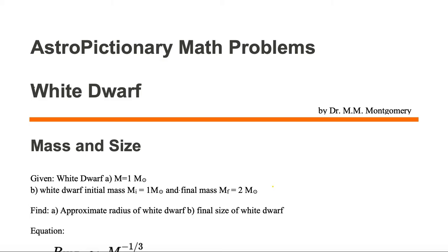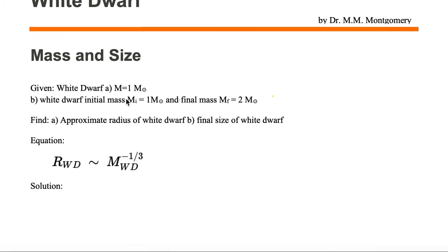In this astro-pictionary math problem, we are going to look at a white dwarf mass and size. We're given in part A a white dwarf mass of one solar mass, and in part B a white dwarf initial mass of one solar mass and a final mass of two solar masses. We want to find in part A the approximate radius of the white dwarf, and in part B the final size of the white dwarf. We're given the relationship where the radius of the white dwarf is approximately equal to one divided by the mass of the white dwarf to the one-third power.